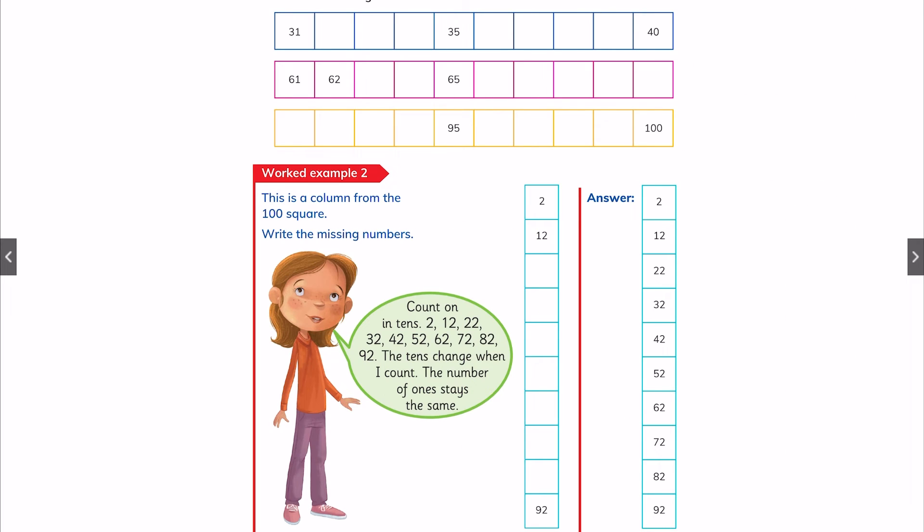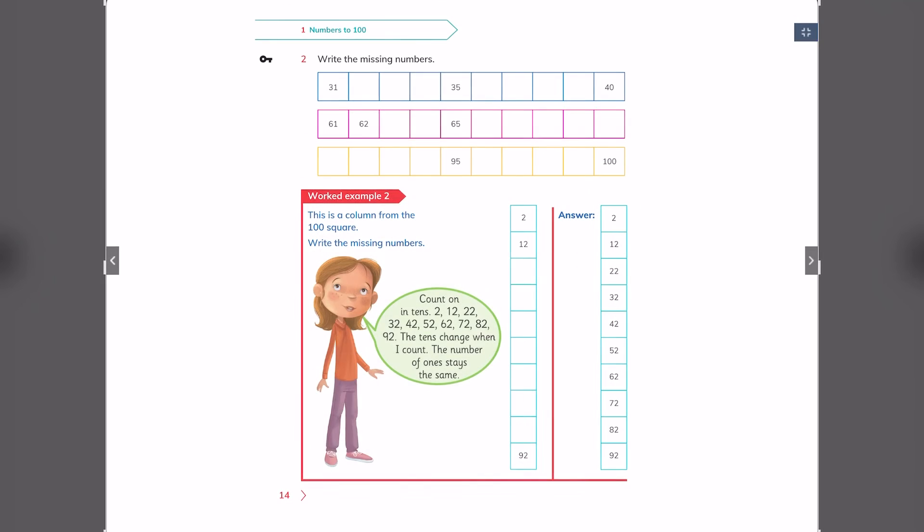We have more number patterns. The first one starts with number 31 and ends with number 40. You should write the missing numbers. This one is also the same and this one is also the same. You gotta fill the spaces and answer it correctly. Now, this is a column, okay? This is a row, this one is a row and this one is a column.